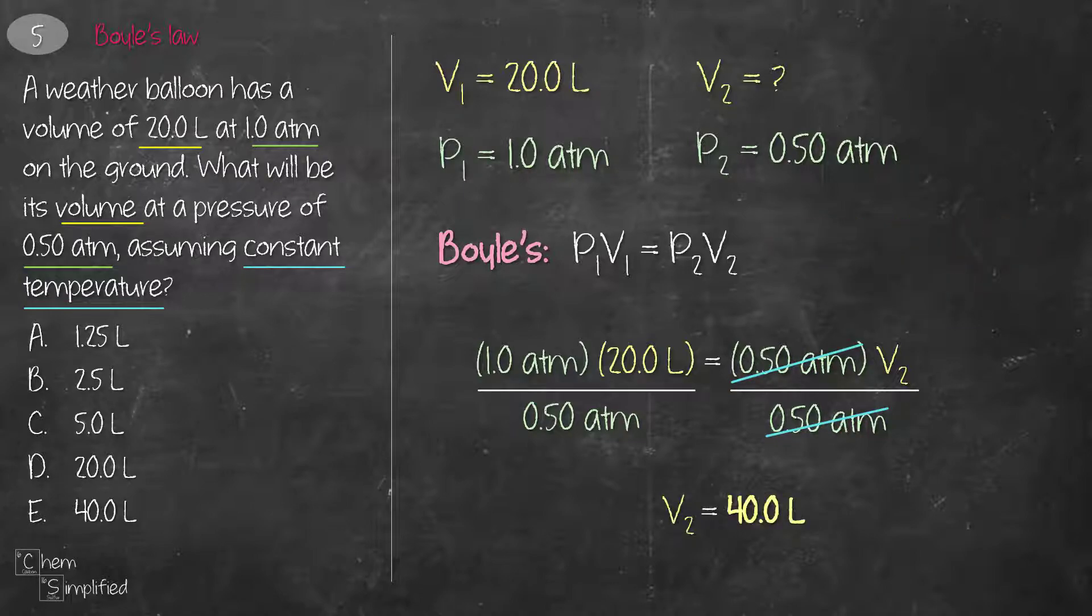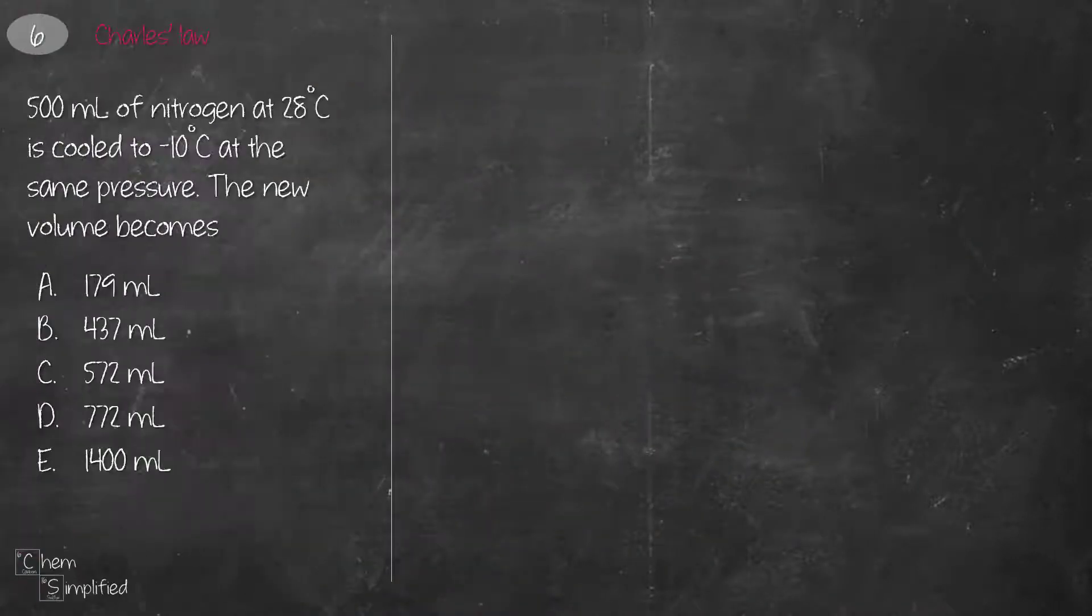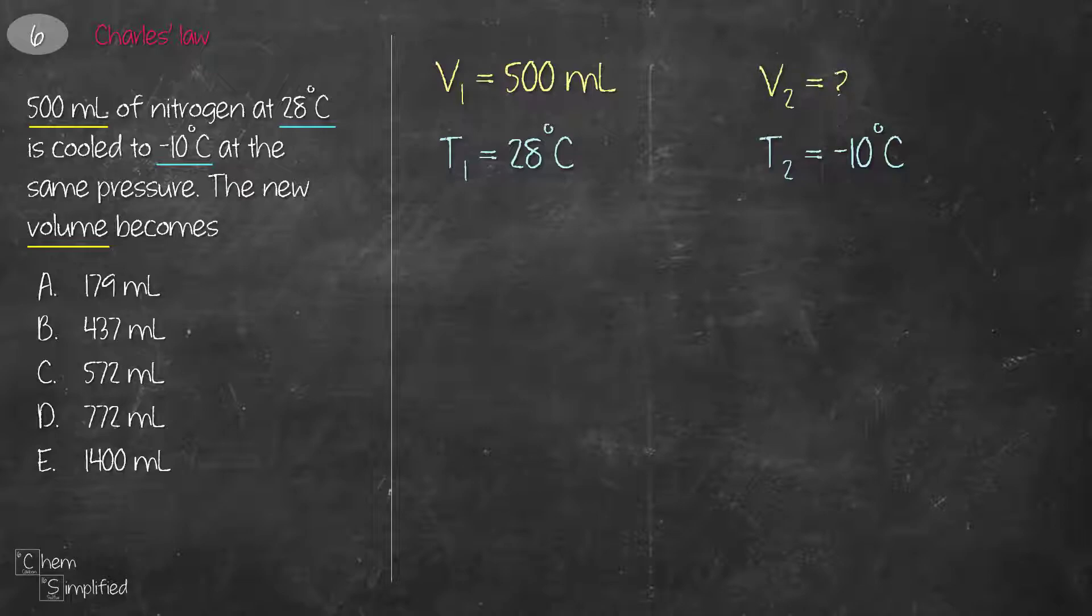This is a Charles law question because it involves changes in volume and temperature. We're given 500 ml V1 at 28 celsius T1. The temperature changed to negative 10 celsius, which is T2, and then we're asked to find the new volume, which is V2.